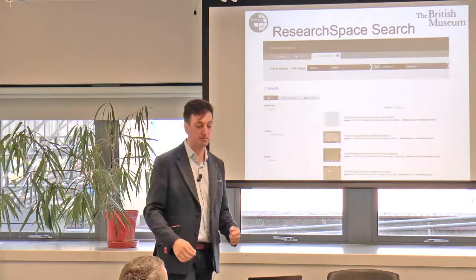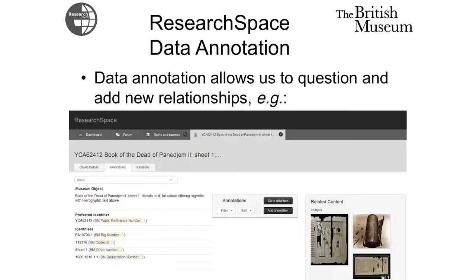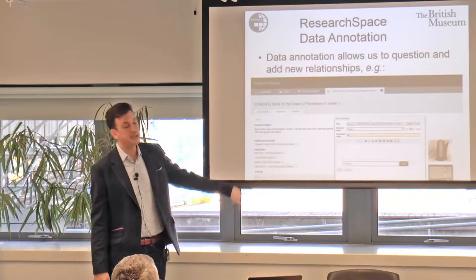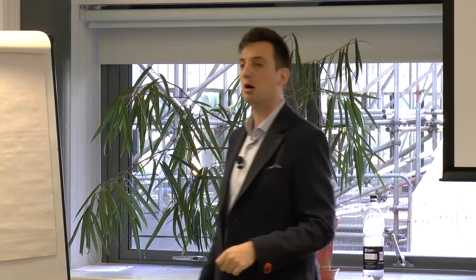We have a tool for data annotation where I can look at the data — in this case the canonical data asserted by the British Museum about an object. I can question things like a depiction of Osiris — I can go in as a ResearchSpace user and say I don't believe it represents Osiris; instead I think it's Ra. The important part is that my assertions are recorded together with provenance — who said so, when, as part of which project — and they're a separate thing from the canonical information from the object owner.